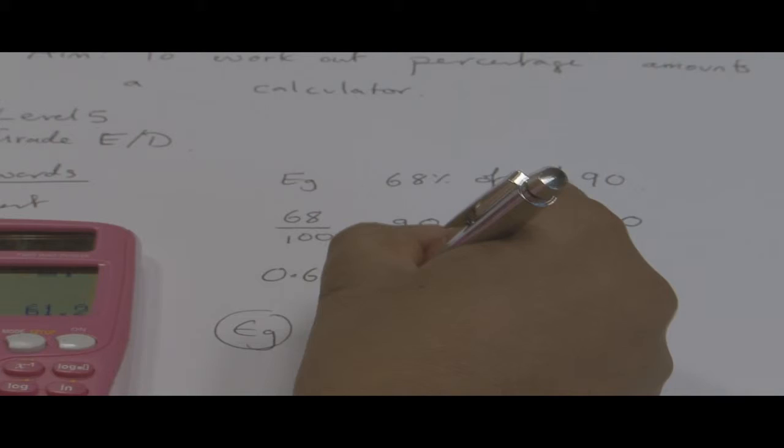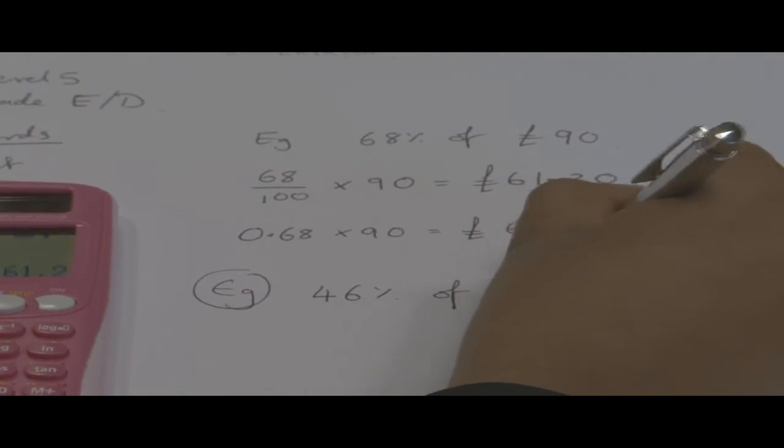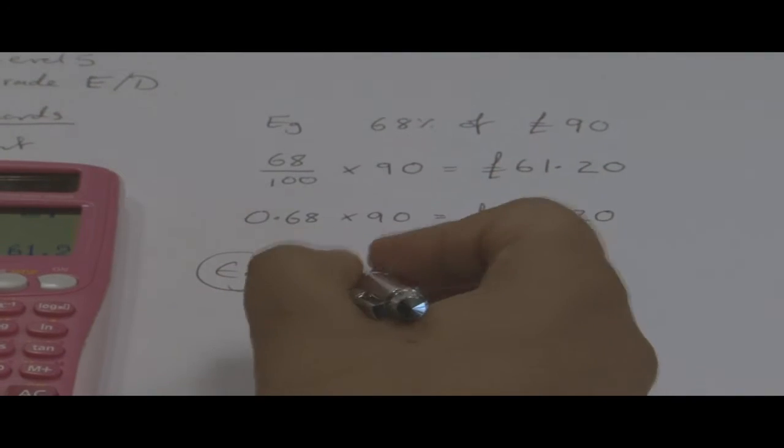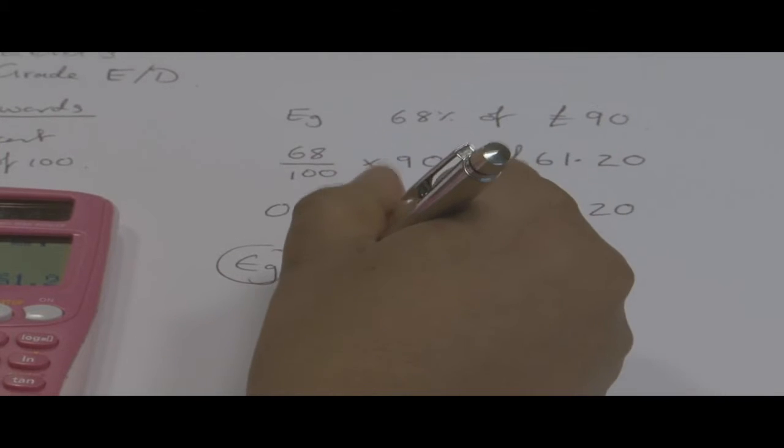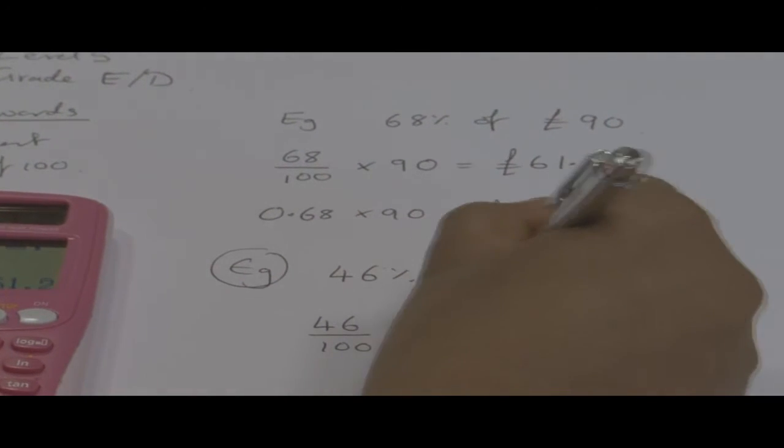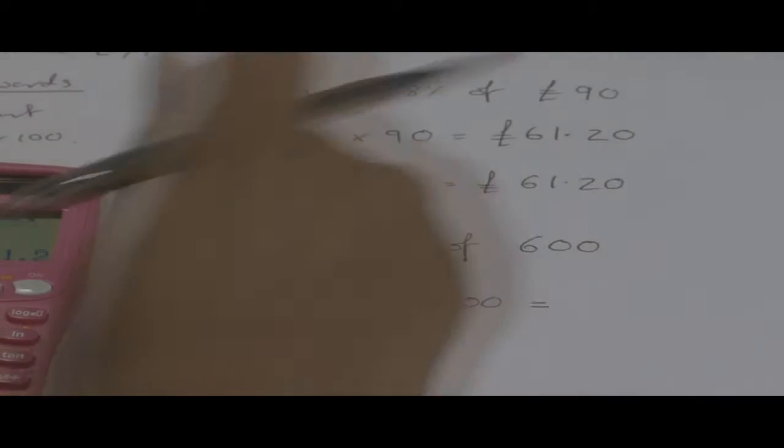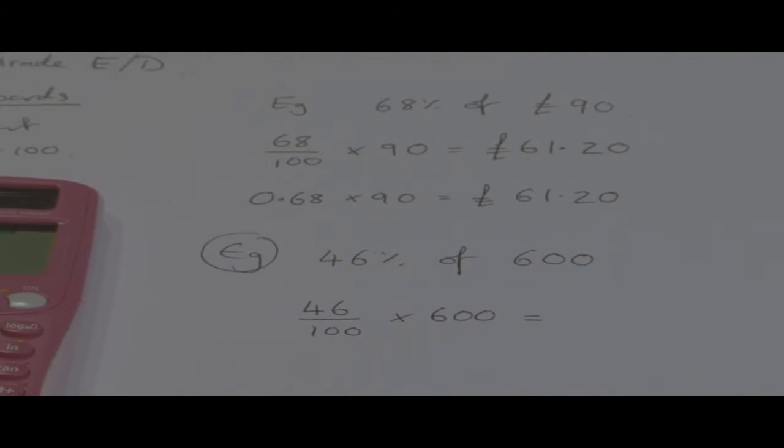So 46% of 600. Again, because percent means out of 100, we put it over 100, and we times by the amount. So we do 46 divided by 100.